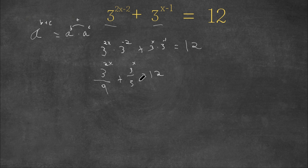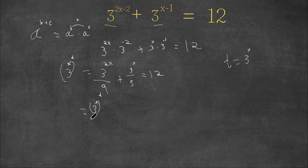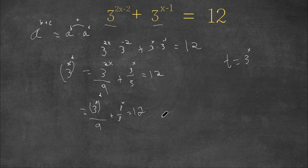Now we're going to set the variable t equal to 3 to the power of x to simplify things. Notice that 3 to the power of 2x is the same as 3 to the power of x, squared — because those exponents simply multiply. So we convert the expression using this substitution, replacing 3 to the power of x with t.